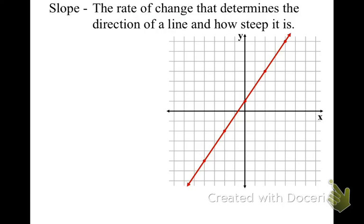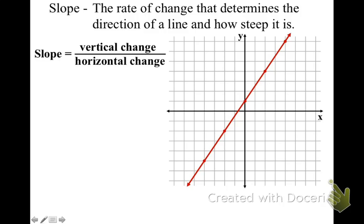Now there are different ways of thinking of slope. One way is the vertical change over the horizontal change. Vertical change means we're either going to go up or down, and horizontal change means we're going to go right or we can also go left. That's one way of thinking of slope.